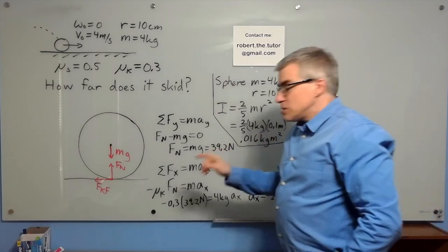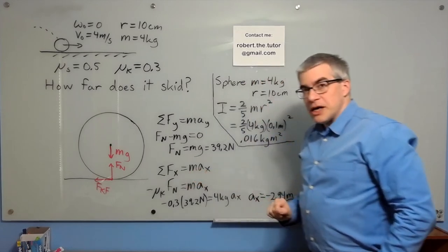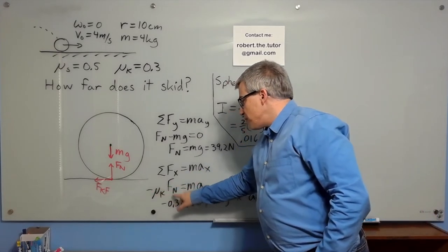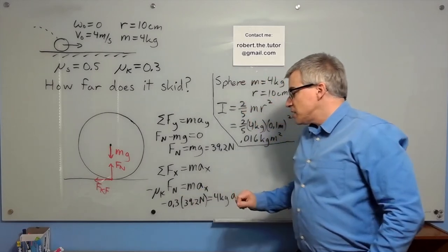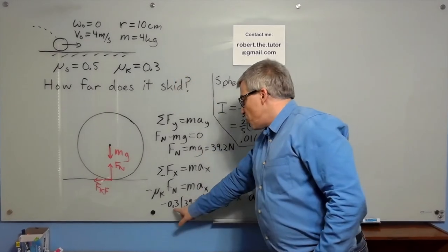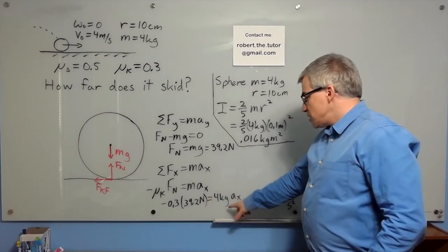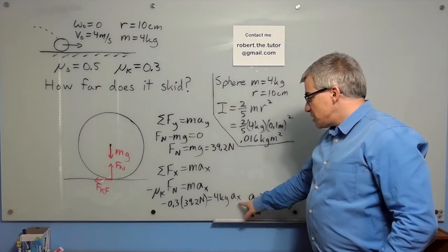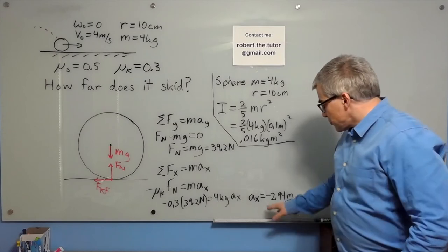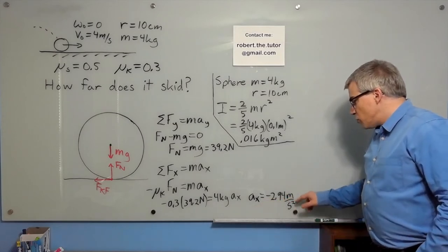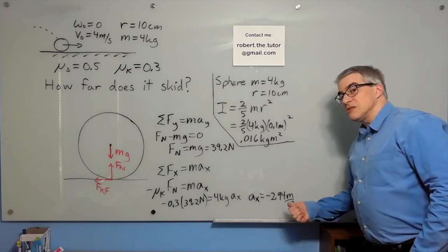Meanwhile, sum of forces X equals MAX. So minus mu K FN equals MAX. Mu K is 0.3, the normal force is 39.2, the mass is 4 kilograms and the acceleration X we can solve for. So the acceleration X is negative 2.94 meter per second squared. In fact, the mass of the ball canceled in that.